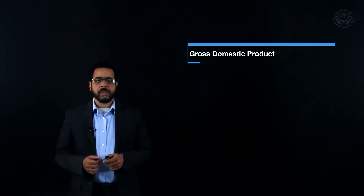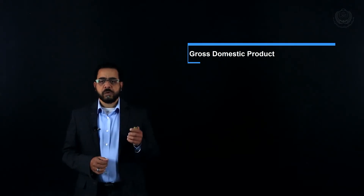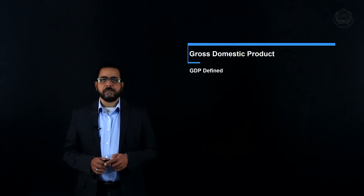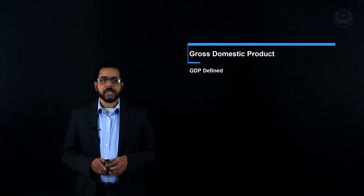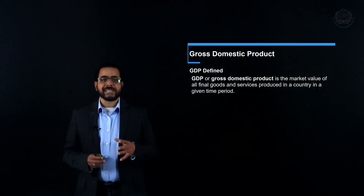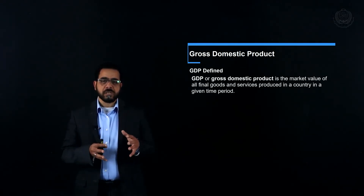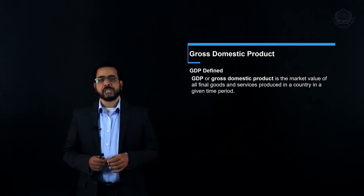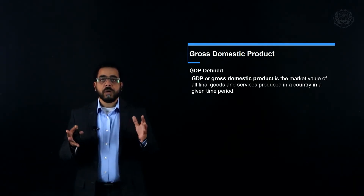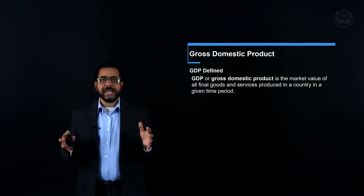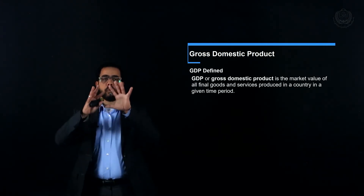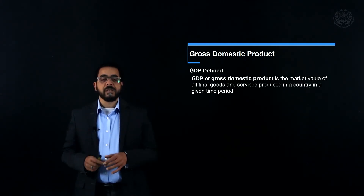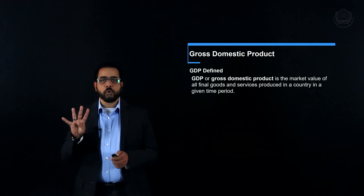In our first unit we're going to talk about the GDP definition. GDP stands for Gross Domestic Product — G is Gross, D is Domestic, and P is Product. How do we calculate the GDP? It is the market value of all final goods and services produced within a country in a given time period. There are four key corners to this definition.